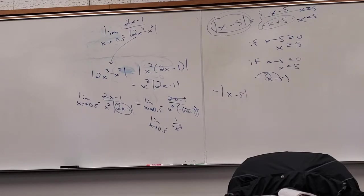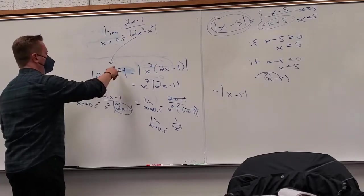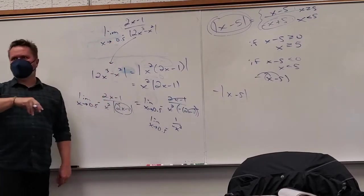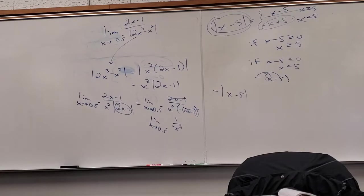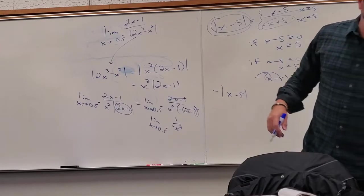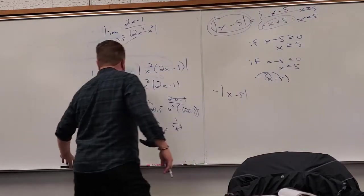A student mentions they got the same answer a different way — they noticed the expression was negative from the beginning and changed the sign from the start without pulling out x squared. That's fine — you might have noticed off the bat that it's negative below one-half, so you went ahead and changed it. That works.